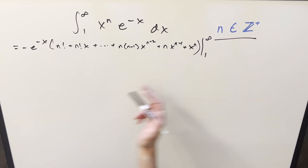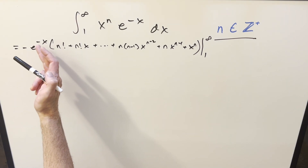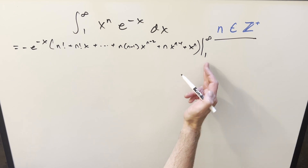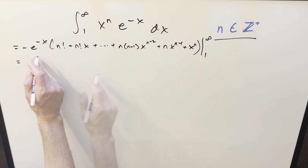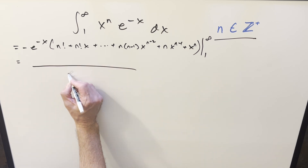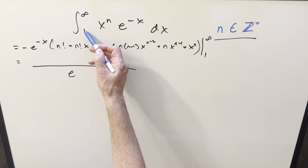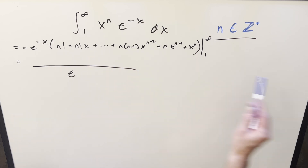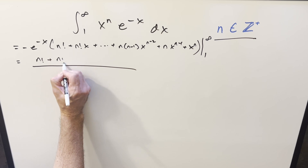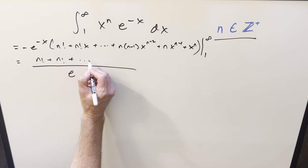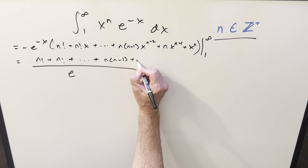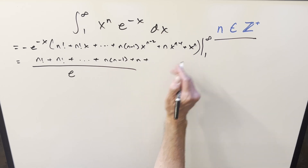First, when you evaluate at infinity, the exponential is going to be more powerful, so this part goes to zero — the first part is just zero. Then for the second part, minus times minus is plus. Plugging in one, e to the minus one — let's bring that into the denominator. This is why it's nice to have the lower bound as one, because it simplifies everything: all these x terms just become one. So what we end up with is n factorial plus n factorial plus a whole bunch of stuff, and then for the last three terms we get n times n minus one plus n, and then just a one.